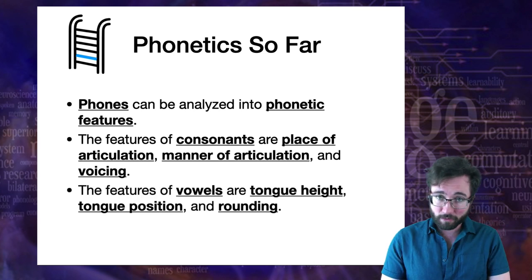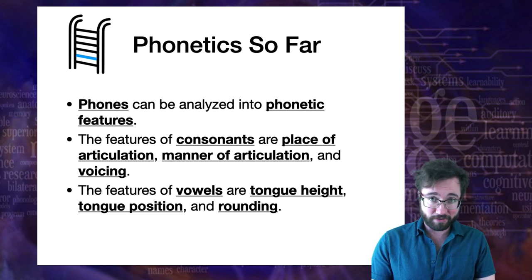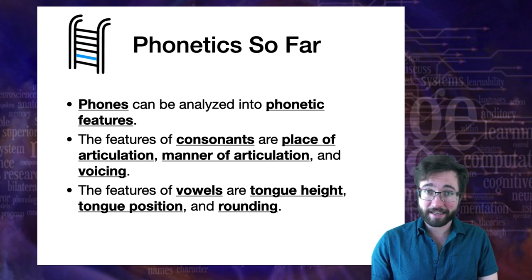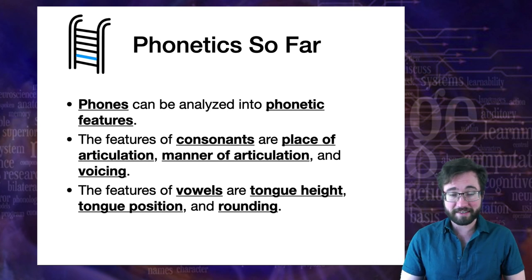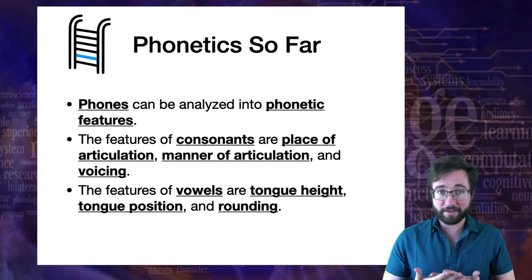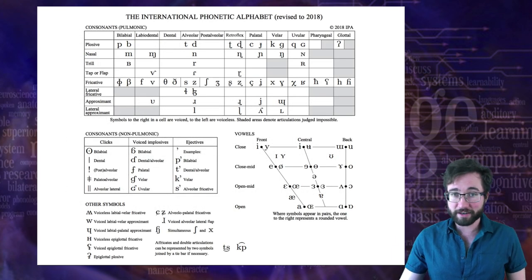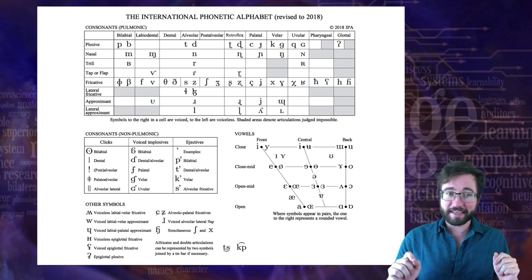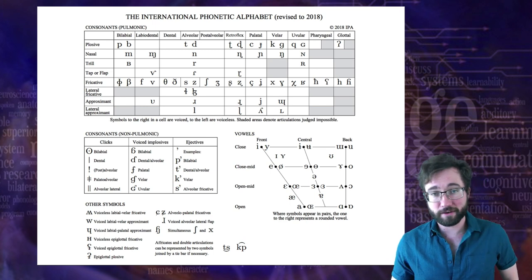We studied vowels. Vowels are also composed of phonetic features, but it's a different set of features. For vowels, the phonetic features are tongue height, tongue position, and lip rounding. Specify these three features, maybe some others, and that tells you how to pronounce a given vowel. Here's the International Phonetic Alphabet, the official chart containing all the features defining the common sounds across languages.